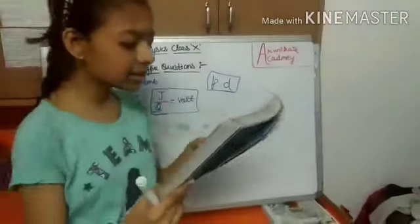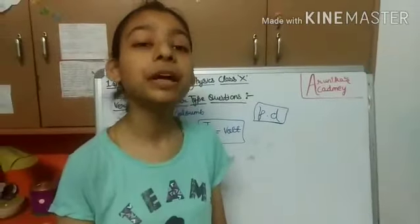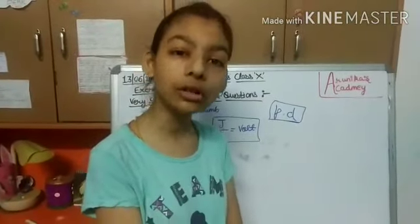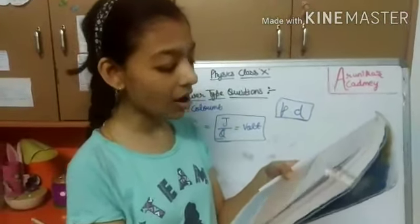Now next is which device is used to measure PD. So PD is measured with an instrument called voltmeter. Now we move to next question.